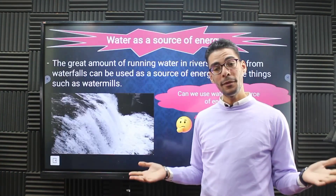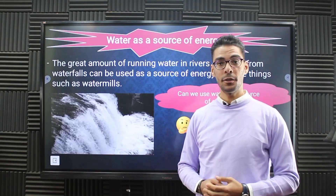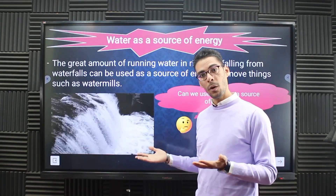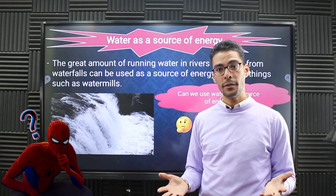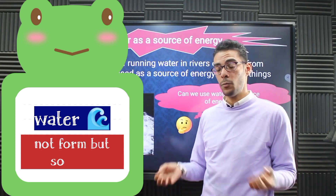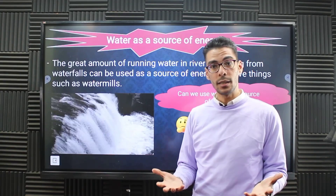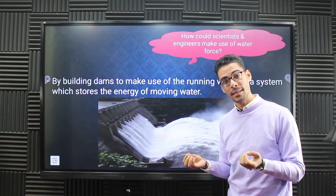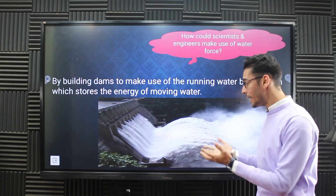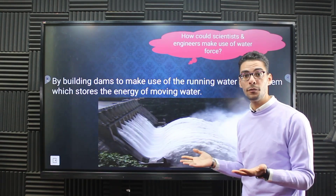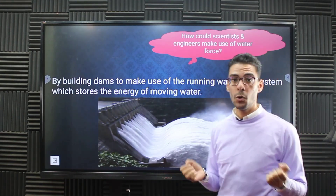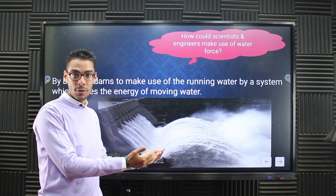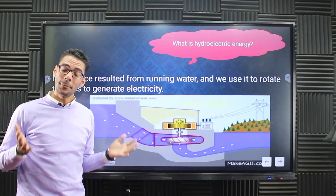From the forms of energies we studied in the previous lesson — kinetic energy, electric energy, light energy — we didn't study that water is a form of energy. Water is not a form of energy, but it could be a source of energy. How can we use water to generate electricity? On the screen you can see a diagram representing the flow of water on a dam. We can use the movement of water to generate electricity, so water is a source we can use to generate electricity.